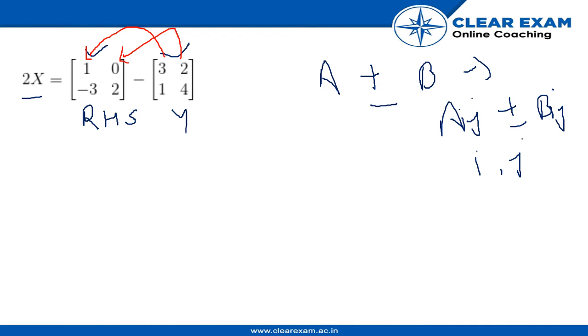That means 3 is to be subtracted from 1, 2 will be subtracted from 0, 1 will be subtracted from -3, and 4 will be subtracted from 2. So let us move to the next step.